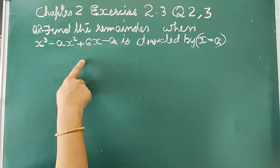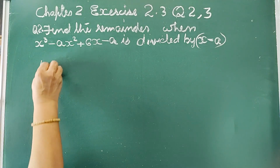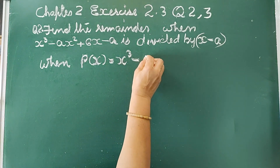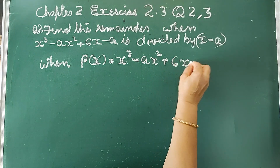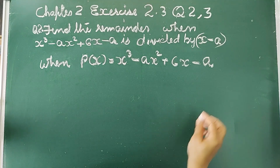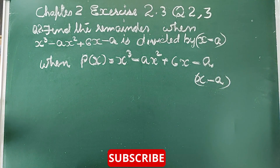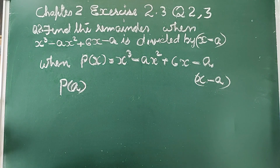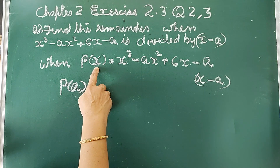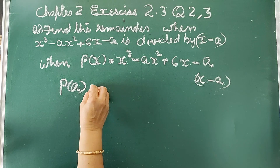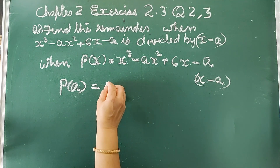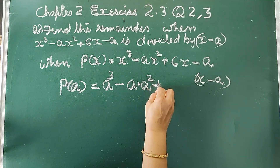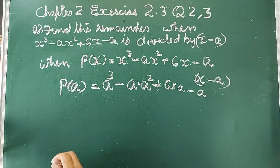We can do this question by using the remainder theorem. When p(x) = x³ - ax² + 6x - a is divided by x minus a, the remainder is p(a). Putting x equal to a in p(x), we get p(a).